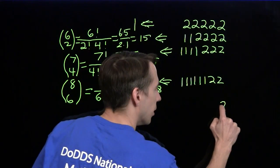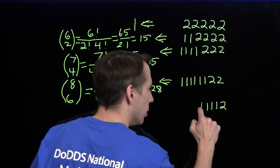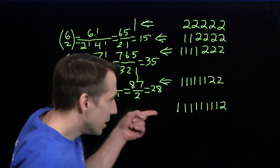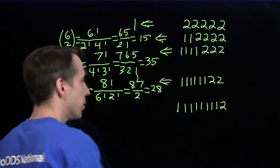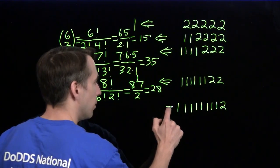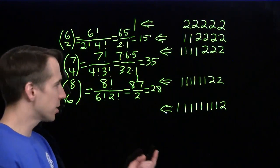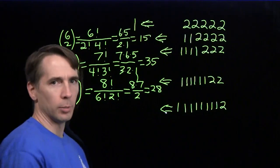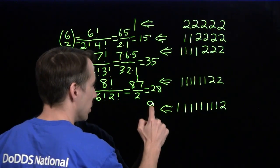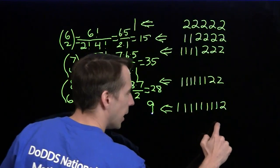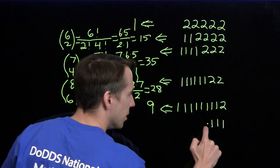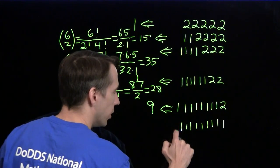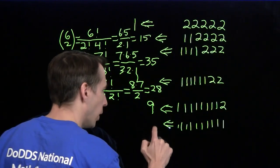Finally, one two-pill day and eight one-pill days — that's nine days total. I don't even have to set it up formally to count these, because I just have nine slots where we can put the two. So there are nine ways to do this. And then the last case — another easy one — is just taking one pill a day for ten days, and there's only one way to do that.